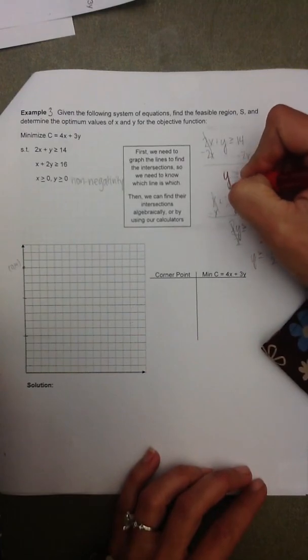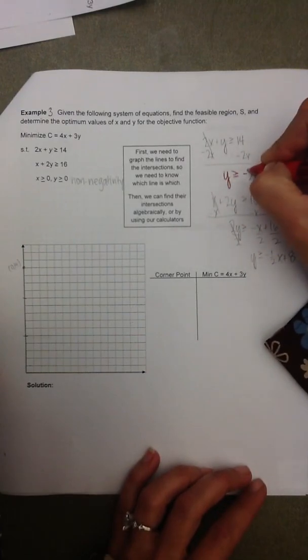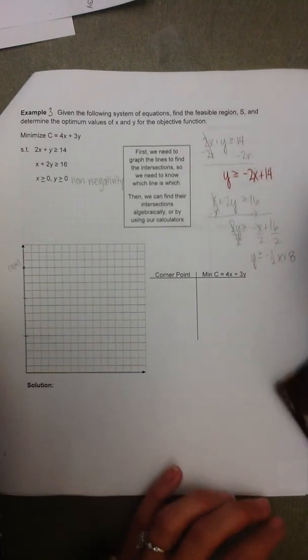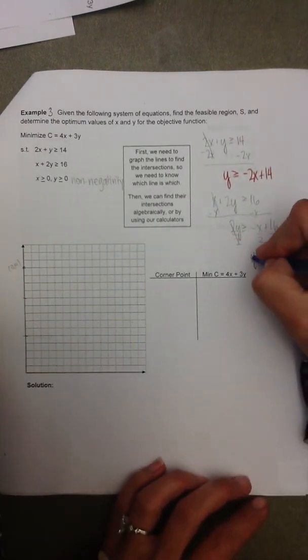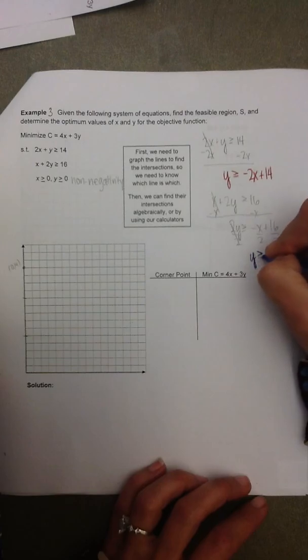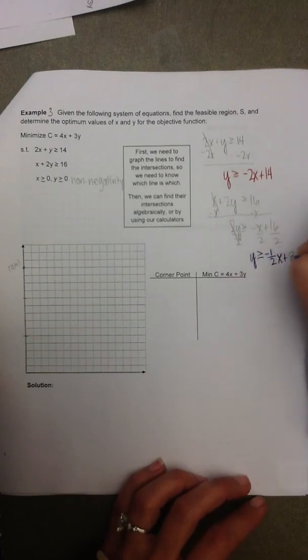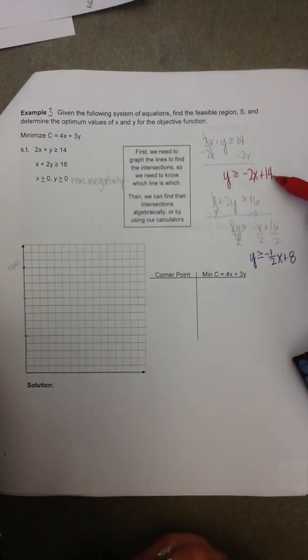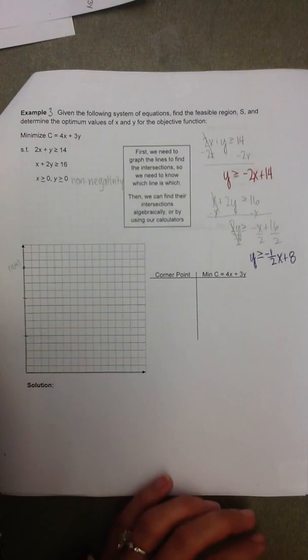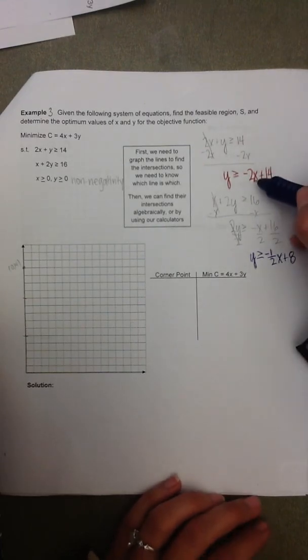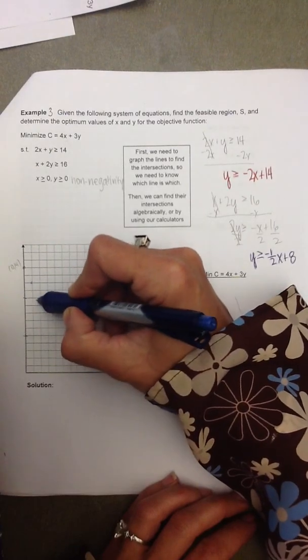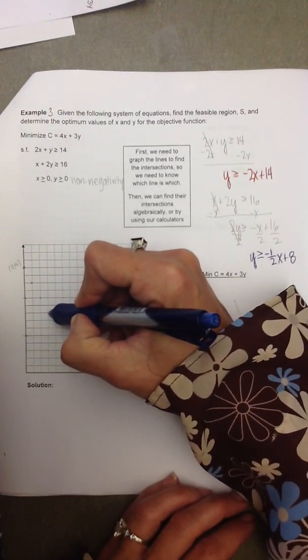And I'm actually going to do these in different colors. Let me rewrite this one in red, so you can distinguish the difference in the graphed inequalities. And the second one I'm going to do in blue. So this first one I would begin graphing the y-intercept of 0, 14 as I did. And from there, the slope is negative 2, so I can come down 2 and right 1 and follow that pattern